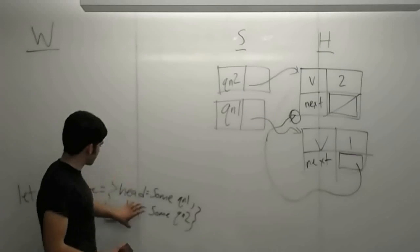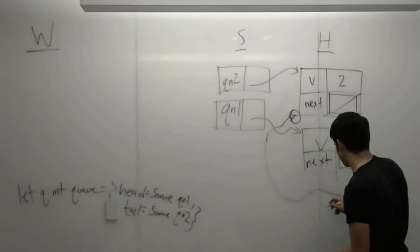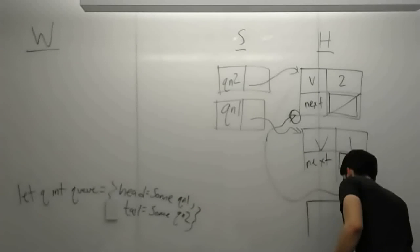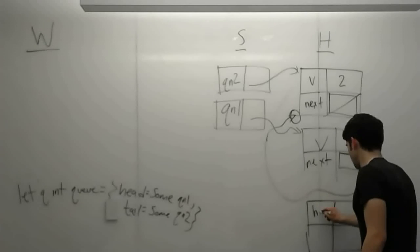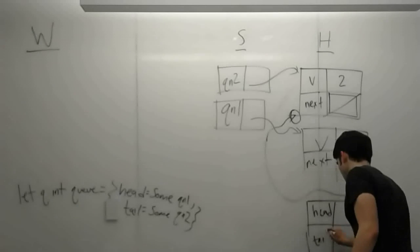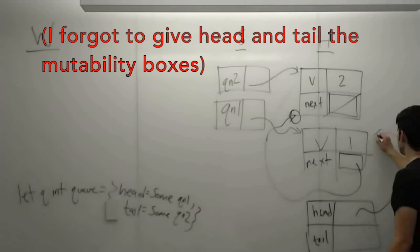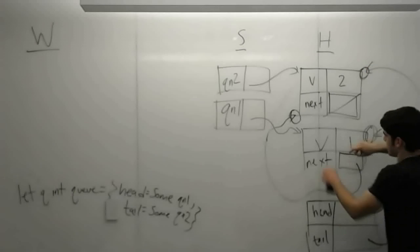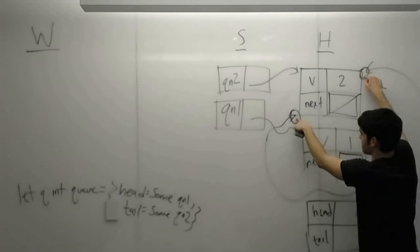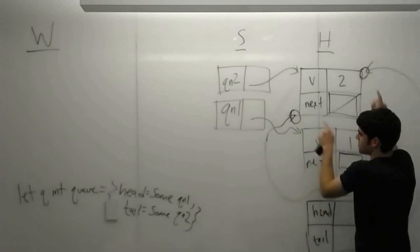And remember, these are both mutable in the type definition. So we do the same thing as before. We have this double entry record. Double entry cell. With a head and a tail. I hope you can see this. Head is sum qn1. So it's just going to be pointing to qn1. Through a sum bubble, tail is sum qn2. Now notice. This sum bubble and this sum bubble are not the same. So they would not be referentially equal. Because they're not the same sum bubble.